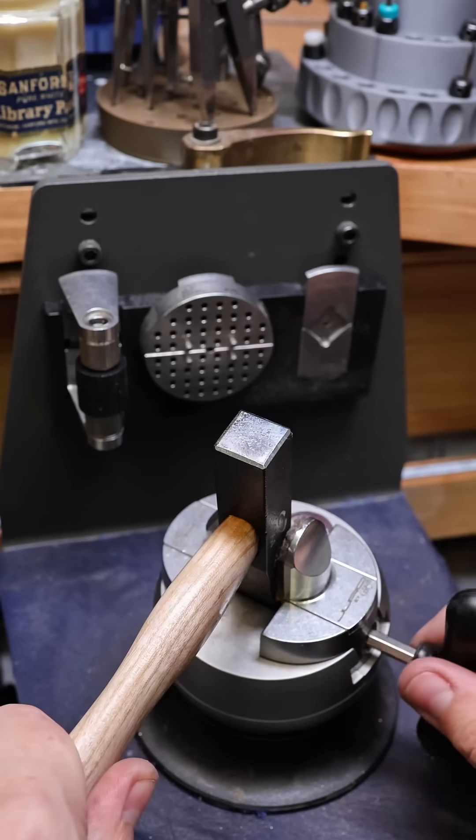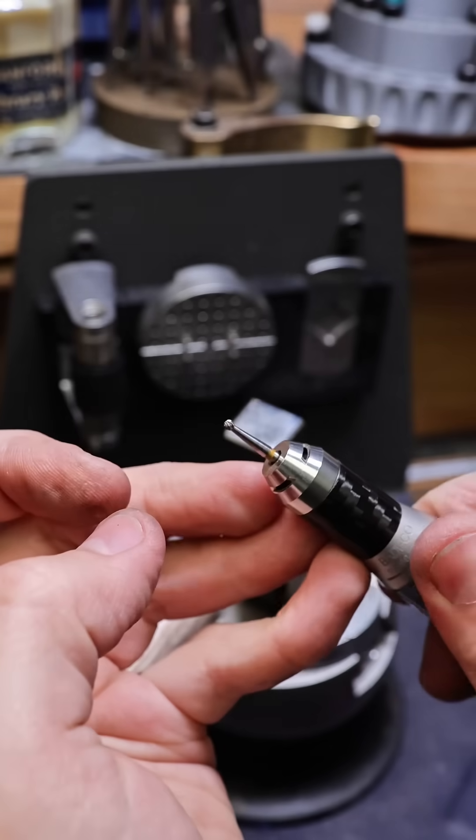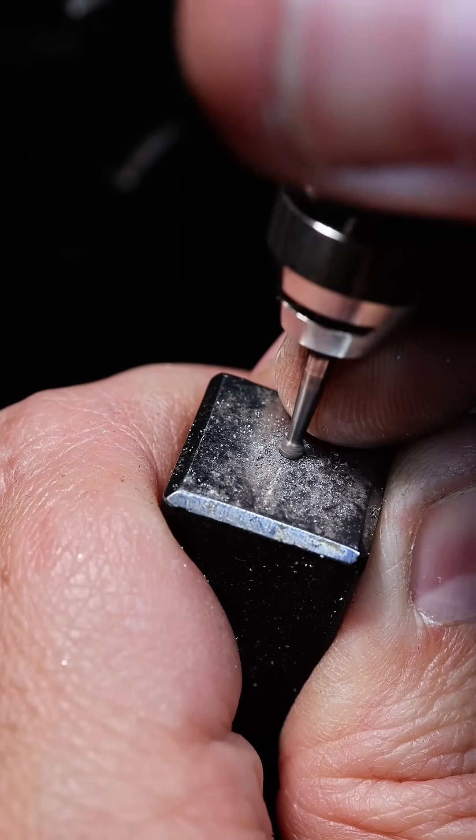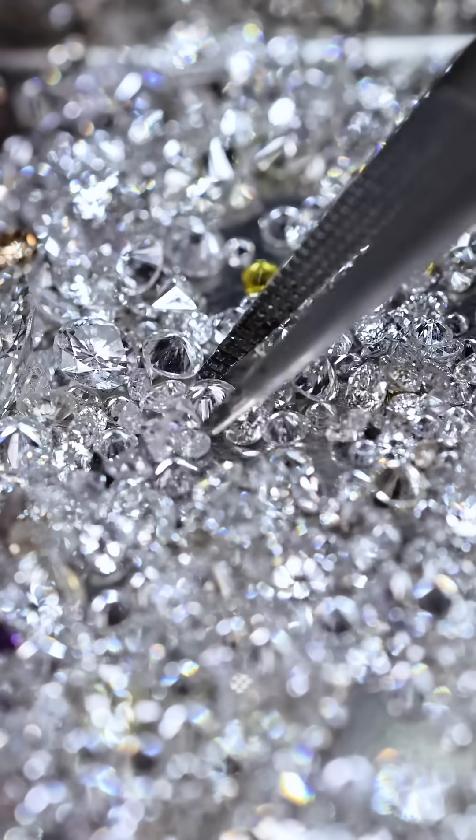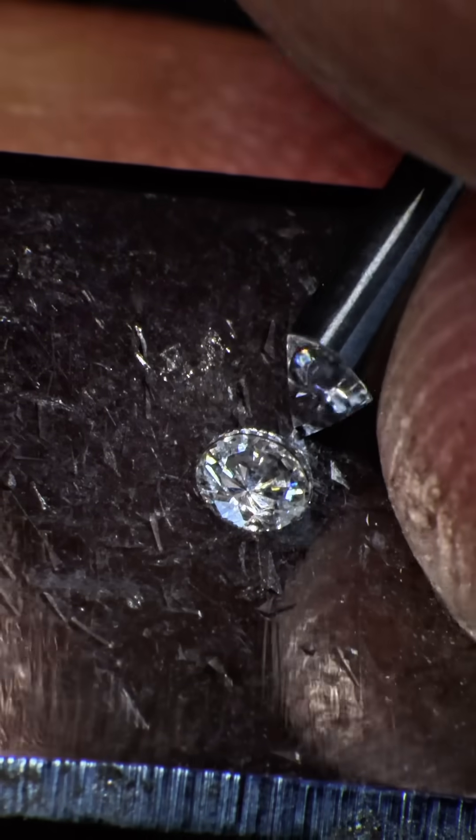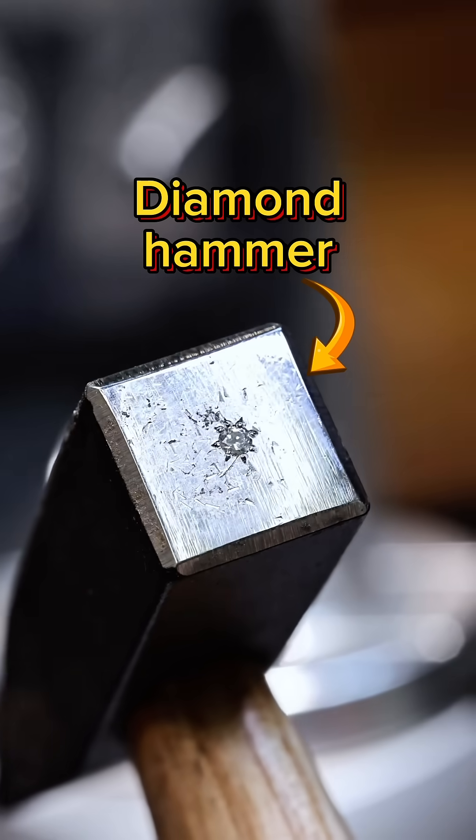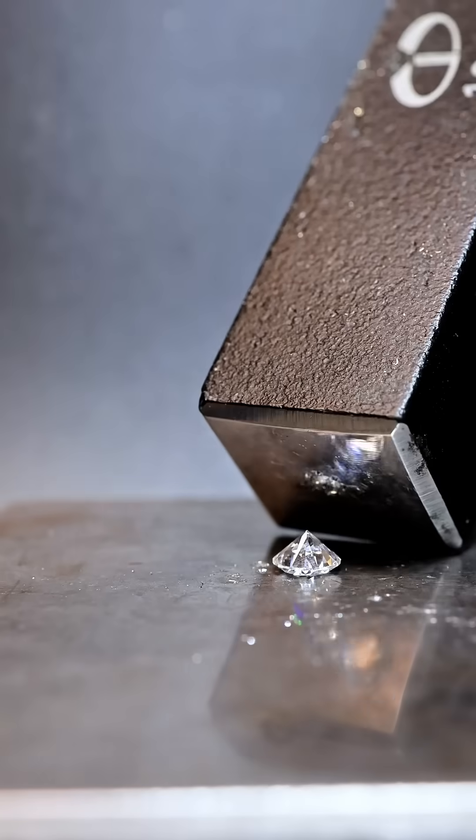So I figure if diamond is the hardest material on earth, then the only way to break a diamond is with another diamond. So I'm going to set this smaller one into the face of my hammer. And now I'm going to try again.